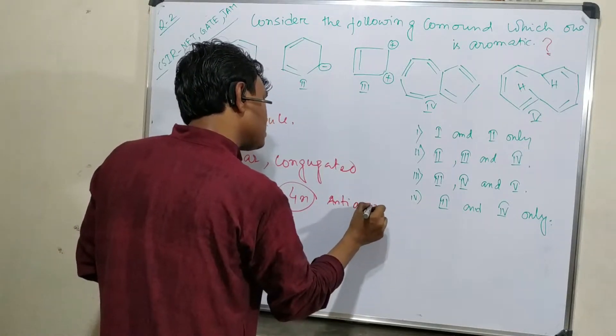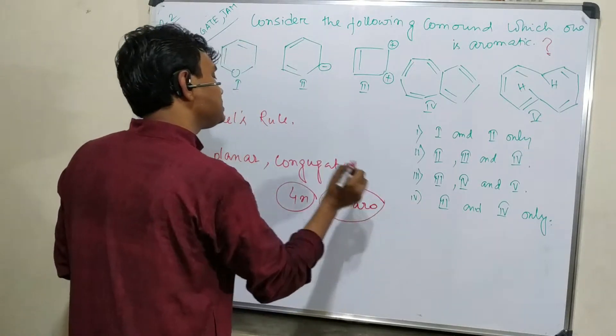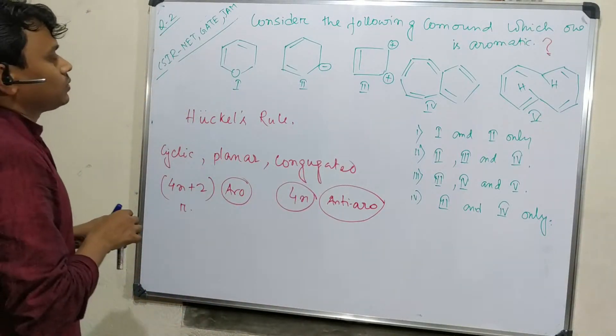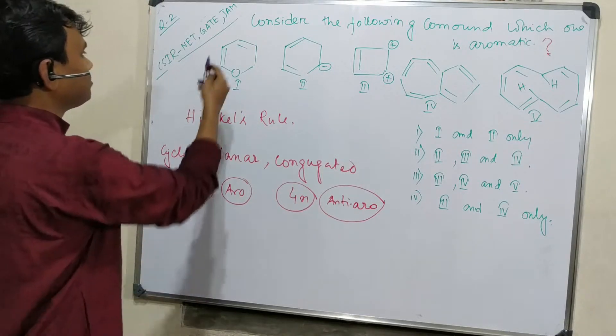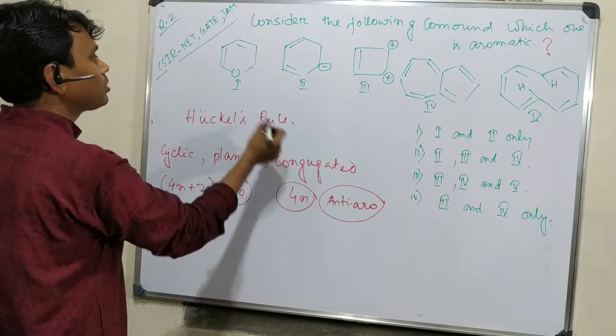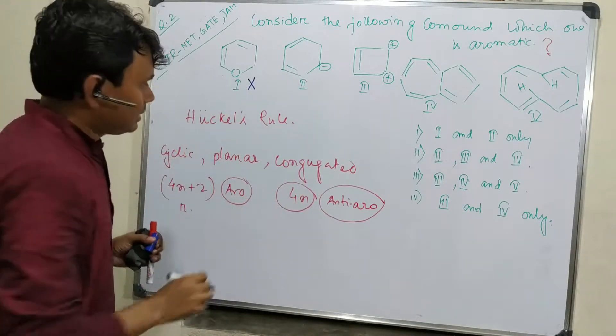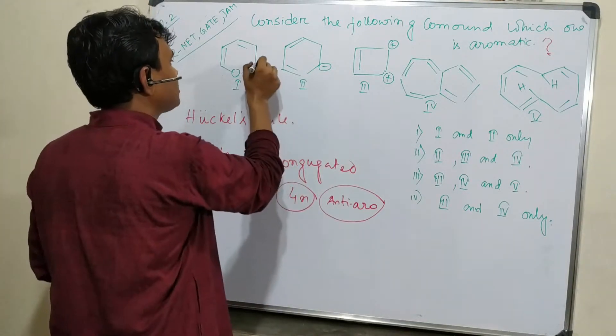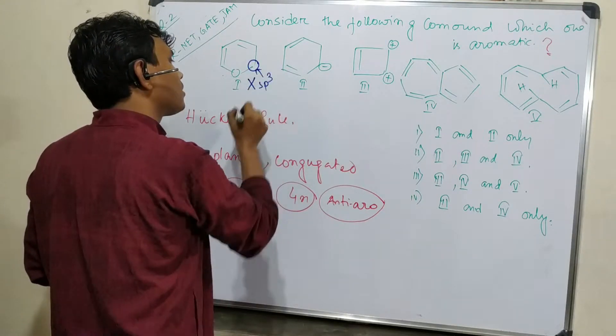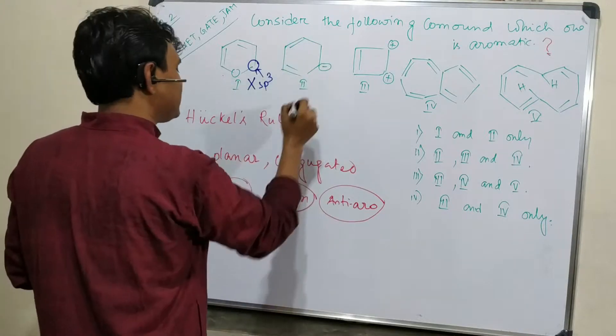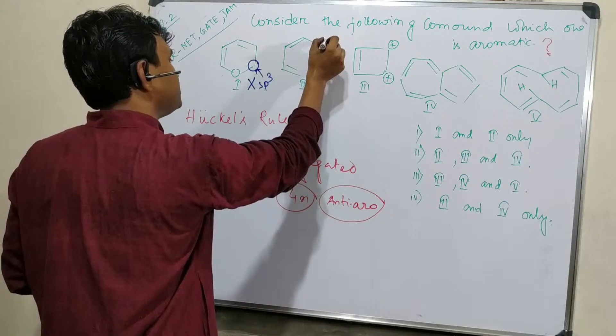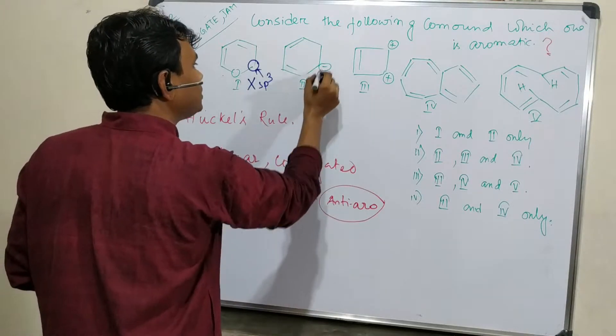This is the main factor which you must keep in mind. Now see, in this example it is cyclic, planar, but not conjugated, so not aromatic. Here also, because this center is sp3, cyclic planar conjugated but not completely conjugated. This part is sp3 carbon.